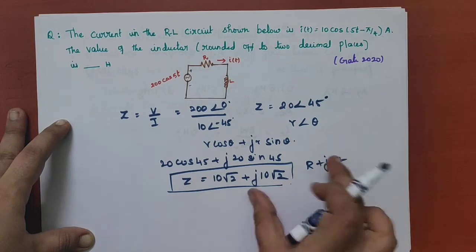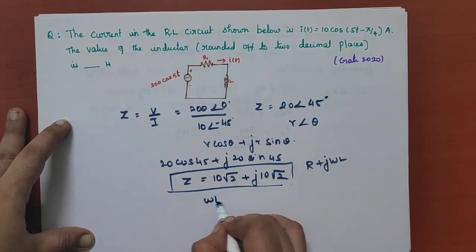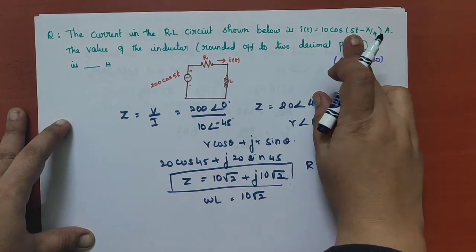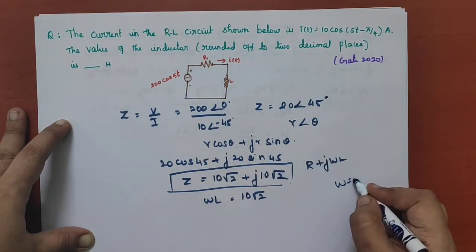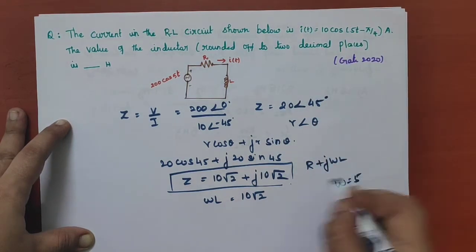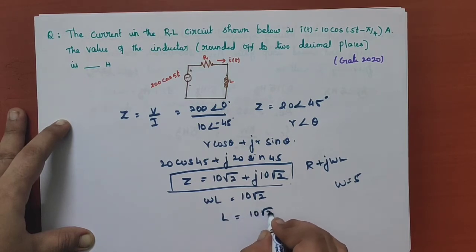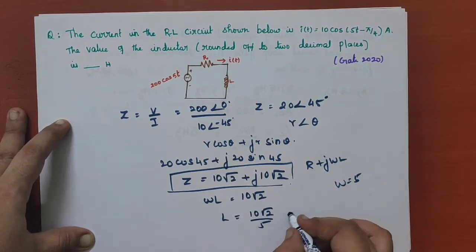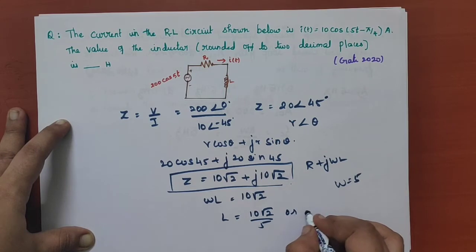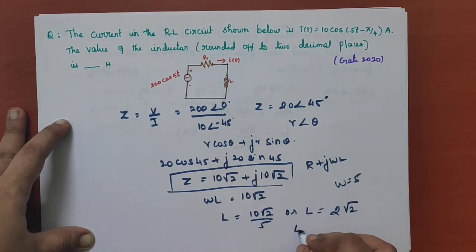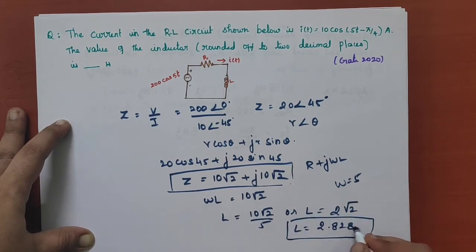We compare the imaginary values: omega L equal to 10 root 2. From the question, omega equals 5. So L equals 10 root 2 divided by 5, which gives L equal to 2 root 2, or L equal to 2.828. This is the value of L.